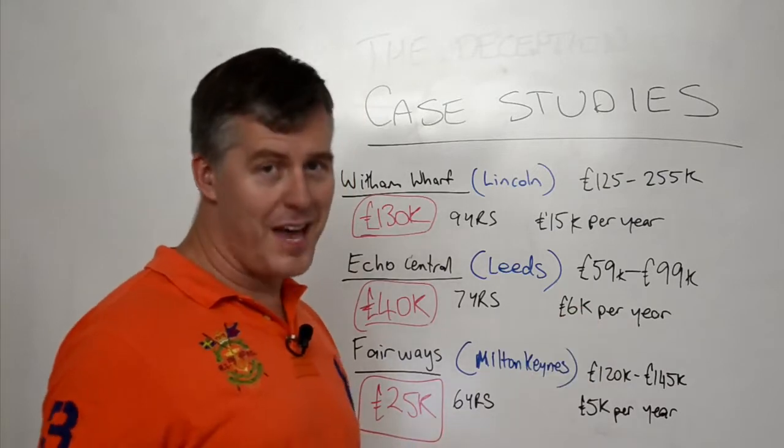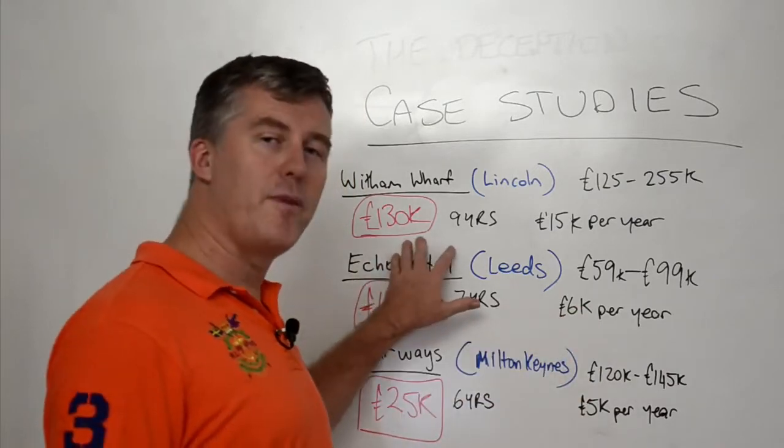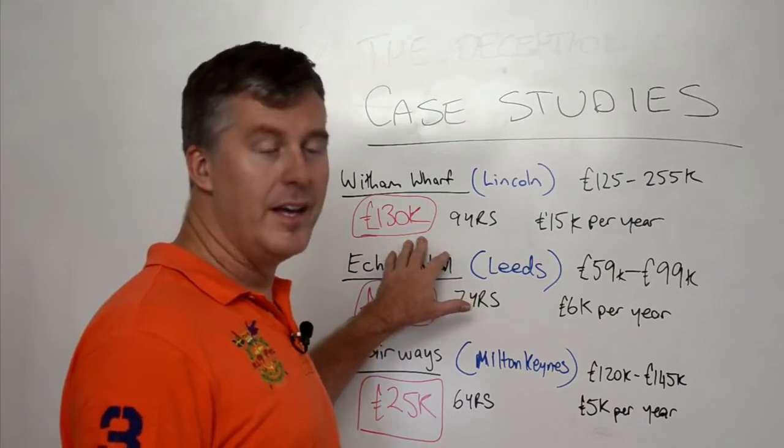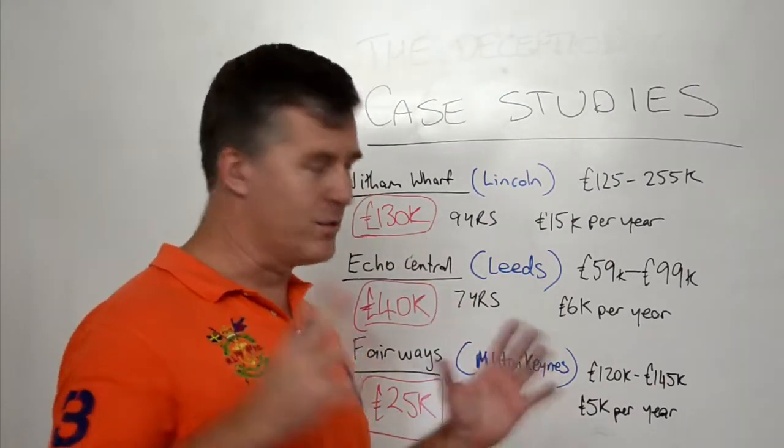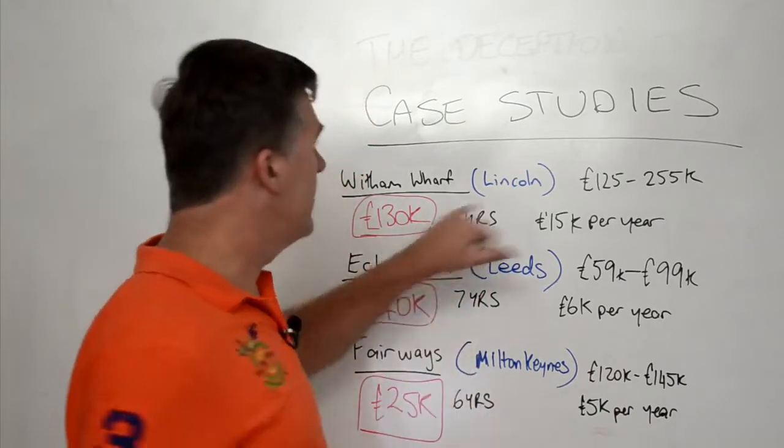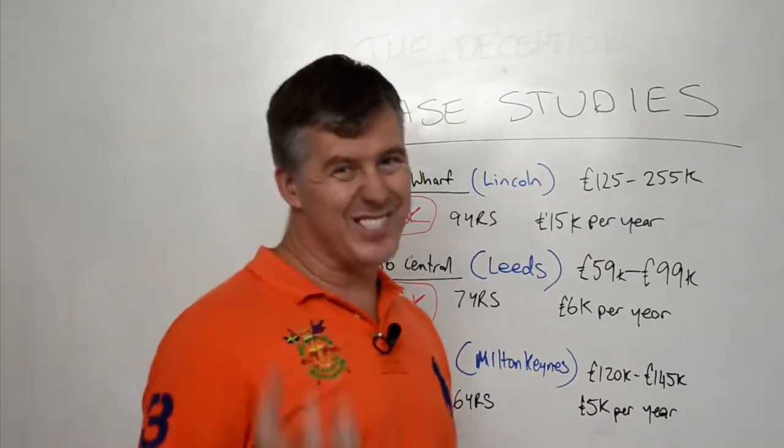So just be careful of that deception because people will say, oh look, 130 grand profit. No, not profit. If you sold it and you got that and then you took away all the fees and taxes, great. So it has gone up under 30%, so it looks like 100% return on your money. In actual fact, it's a lot more because you paid a deposit and got a mortgage.